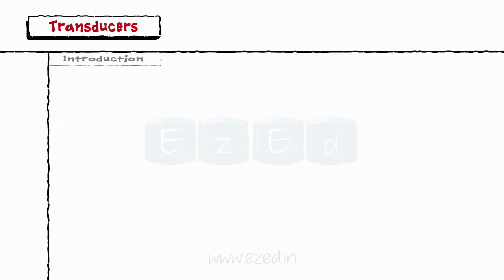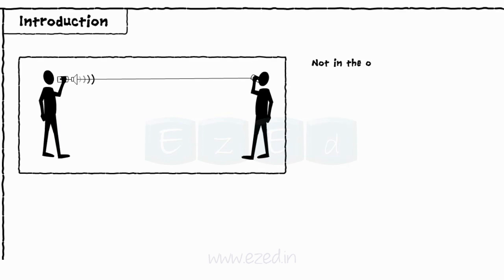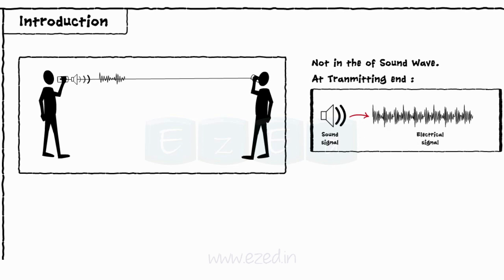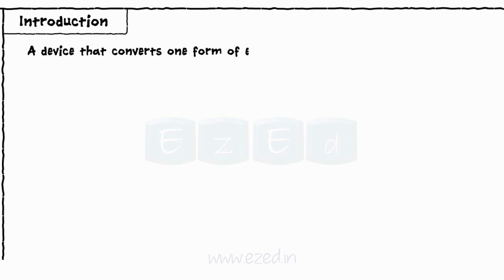Let's start with the introduction. When we talk on a landline, we generate a sound signal. This sound signal is transferred from the speaker to the listener via a telephone cable, but not in the form of a sound wave. First, it is converted into an equivalent electrical signal at the transmitting end. This electrical signal then travels through the telephone cable, and then again at the receiving end, it is converted back to the original sound signal. A device that converts one form of energy to another is called a transducer.